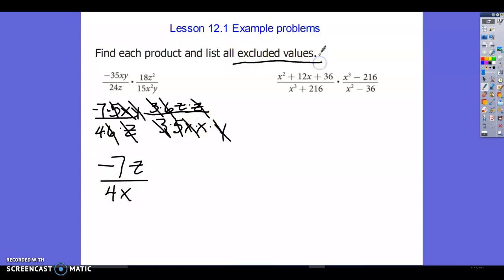So I'm left with negative 7z over 4x. And it says, make sure you include excluded values.